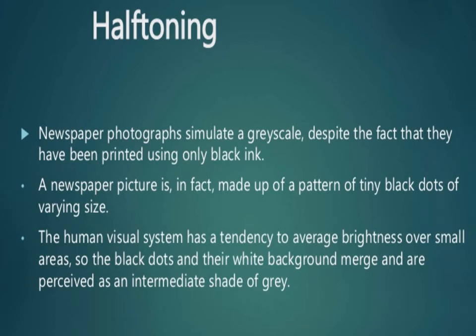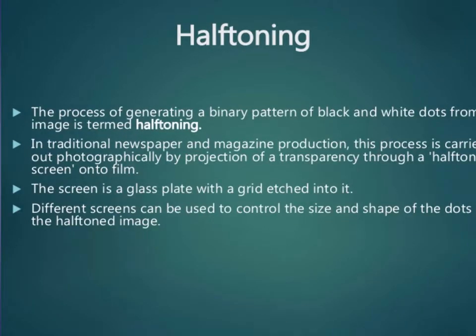Today's topic is halftone and dithering techniques. All output devices have a limited intensity range, so we can create an apparent increase in the number of available intensities by incorporating multiple pixel positions into the display of each intensity value. For example, newspaper photographs simulate grayscale despite being printed using only black ink. The picture is made of a pattern of tiny black dots of varying size. The human visual system tends to average brightness over small areas, so the black dots and white background merge and are perceived as an intermediate shade.